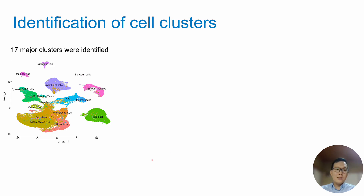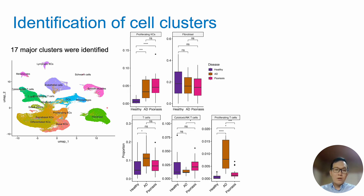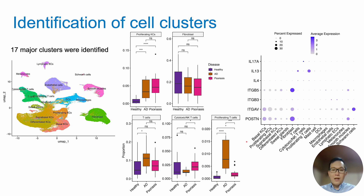First, we identified 17 major clusters. Among them, the number of proliferating keratinocytes were higher in AD as well as psoriasis. However, the number of T cells and proliferating T cells were very prominent for AD. We found out that berostin and its receptors were mostly expressed in fibroblasts and basal keratinocytes. T cells and proliferating T cells are the main source of IL-13.